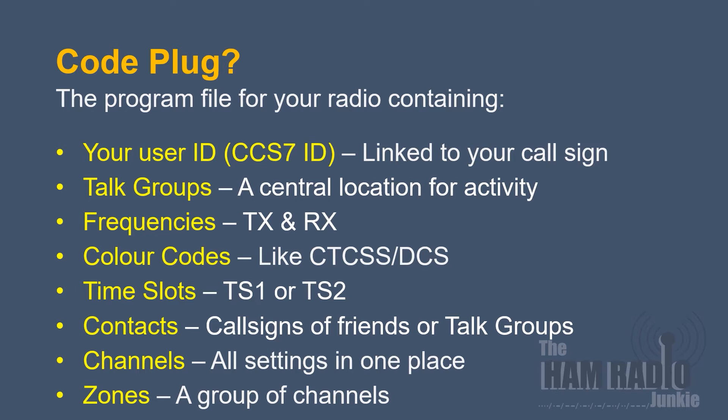Frequencies — that's the receive and transmit frequency for the radio and the channel that you want to operate on. Color codes are very similar to CTCSS and DCS tones on analog repeaters, enabling you to use two repeaters very closely but not interfere with each other. There are timeslots — timeslot 1 or timeslot 2 — and these enable operators to use the same frequency at the same time on two different timeslots without any interference through the same repeater or hotspot. Contacts are call signs of your friends, fellow amateurs, or talk groups, and are a handy place to remember talk group numbers. Channels are quite simply all the settings for one channel that you put in place, and then a collection of channels is known as a zone.